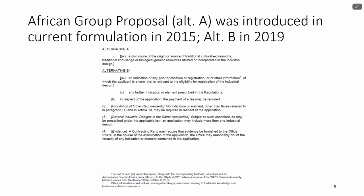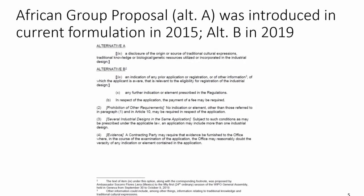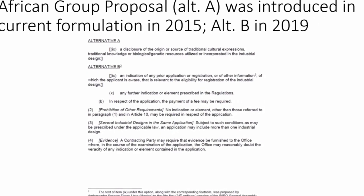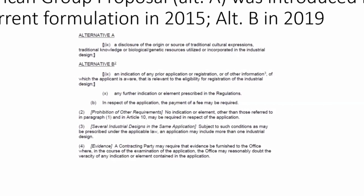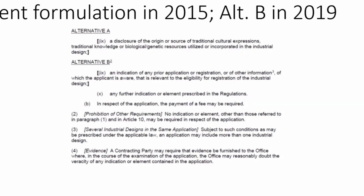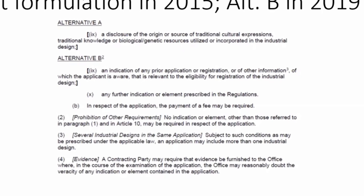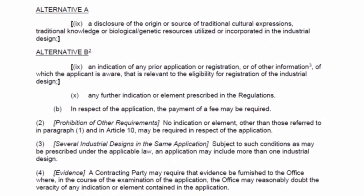The African group proposal in its current formulation was introduced in 2015 — it was a slightly different formulation in 2014 — and then Alt-B in 2019. So we have these two alternatives now where, in this closed list, something that could be required is a disclosure of the origin or source of traditional cultural expressions, traditional knowledge, or biological genetic resources utilized or incorporated in the industrial design. Then with Alt-B, an indication of prior application of registration or other information of which the applicant is aware that is relevant to the eligibility for registration of the industrial design.